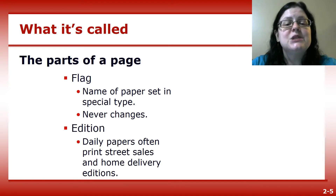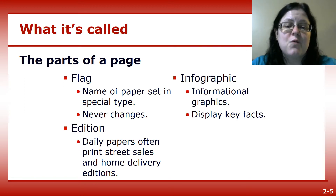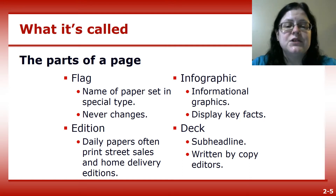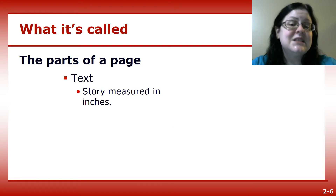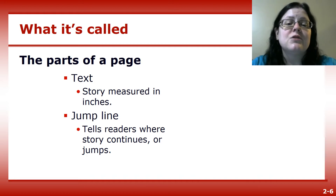The edition is a specified issue of the paper. Some papers print more than one edition, one for street sales and others for delivery to subscribers in different parts of their circulation area. An infographic is a chart or graph that visually displays key facts from a story. And then a deck. This is a sub-headline written by copy editors that supplements information in the main headline. Text is the story, measured in columns and inches. A jump line is used when a page one story continues on an inside page. Editors label the story with a keyword and run the jump line to tell readers where the story continues.